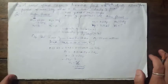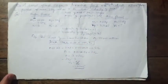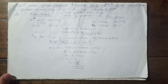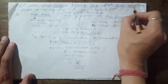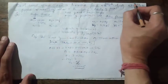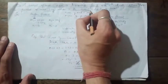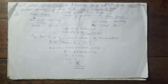When we fire the gun, the bullet moves forward and the gun moves backward — that backward jerk is called recoil velocity. We have to calculate the velocity at which the pistol moves backward. The bullet's mass, the pistol's mass, and the bullet's forward speed are all known.